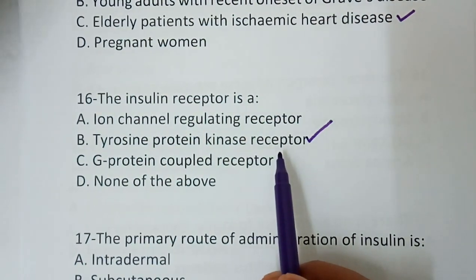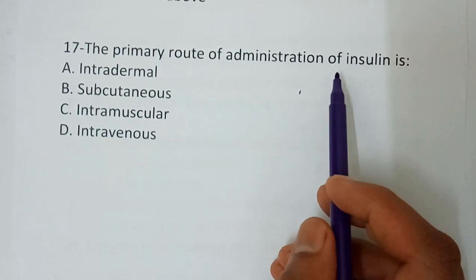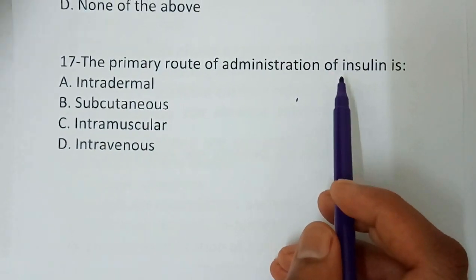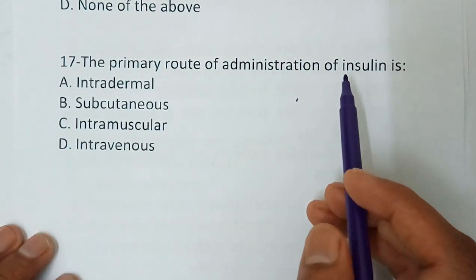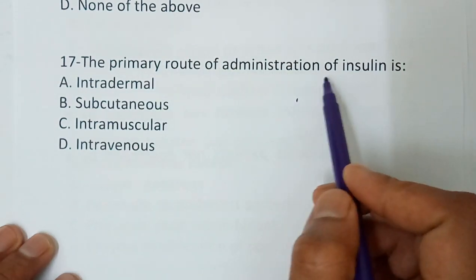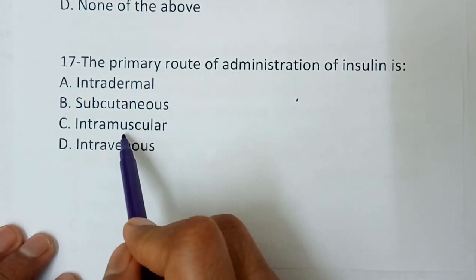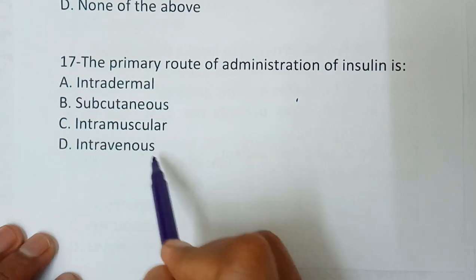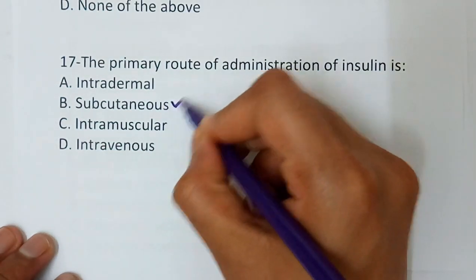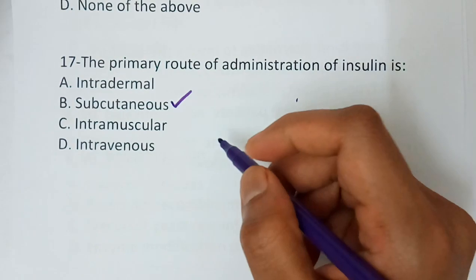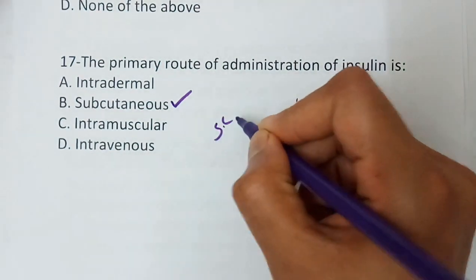Question number 17 — the primary route of administration of insulin is: option A, intradermal; option B, subcutaneous; option C, intramuscular; option D, intravenous. The correct answer is option B — subcutaneous. Insulin is given through the subcutaneous route.